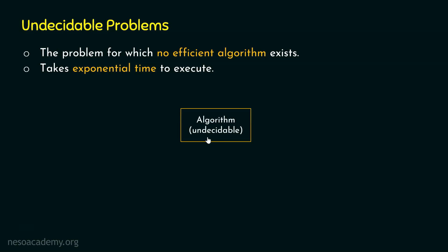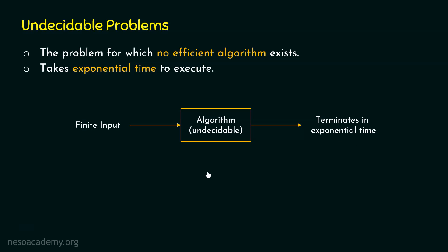An inefficient algorithm accepts a finite input and terminates in exponential time — time which we humans cannot bear. A decidable problem is one for which at least one efficient algorithm exists. An undecidable problem is one for which no efficient algorithm exists. An efficient algorithm takes polynomial time or less; an inefficient algorithm takes exponential time.